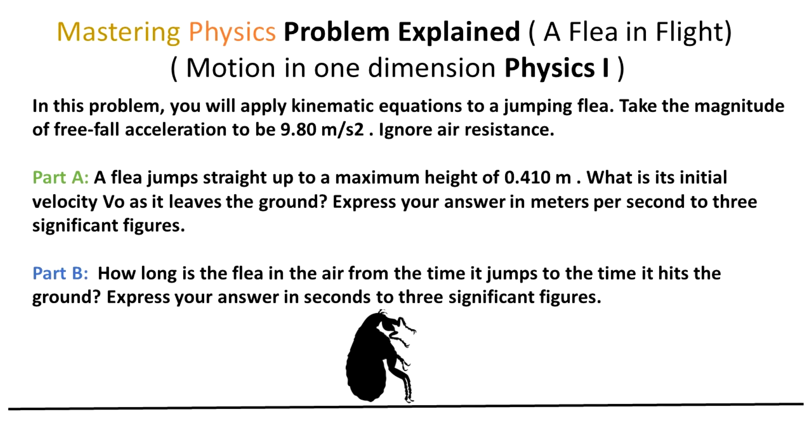So this problem has two parts. We are going to start working on part A. A flea jumps straight up to a maximum height of 0.41 meters. What is the initial velocity V0 as it leaves the ground? Express your answer in meters per second to three significant figures.